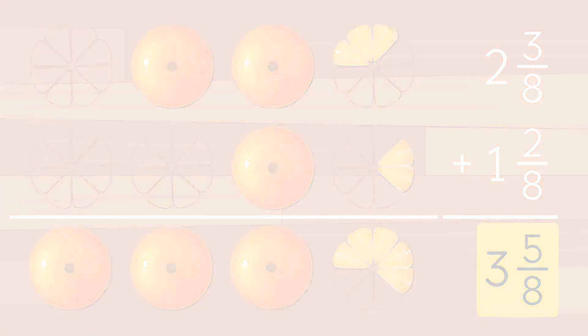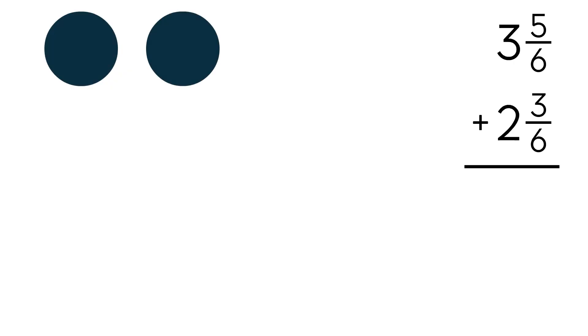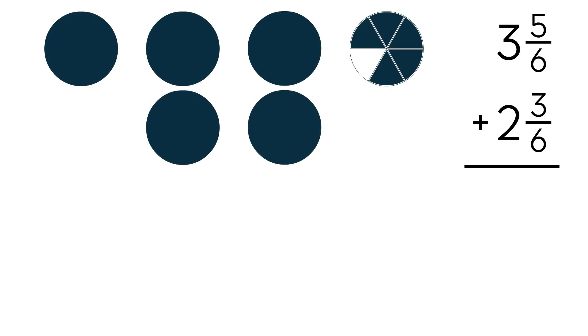Now let's do another example: 3 and 5 sixths plus 2 and 3 sixths. Let's draw a model. We have 3 wholes and 5 sixths, and 2 wholes and 3 sixths.